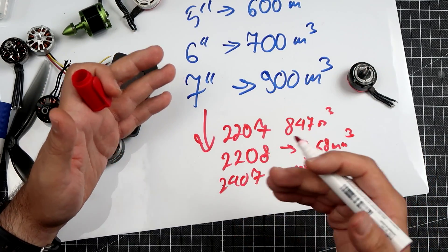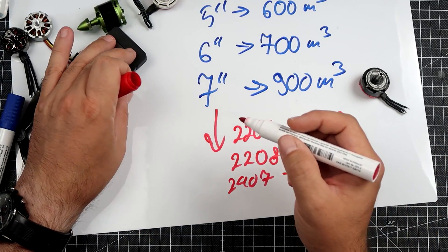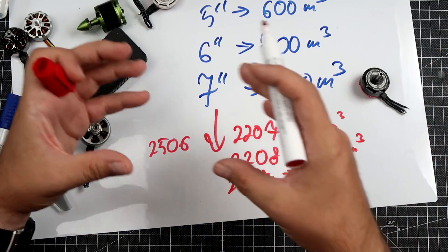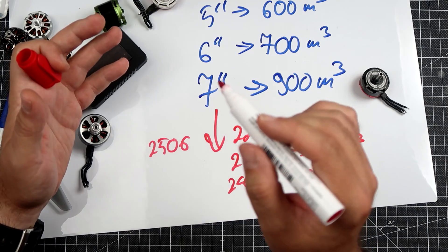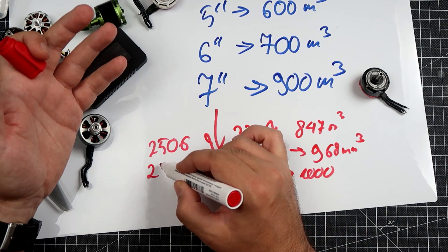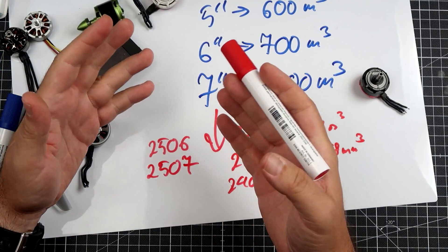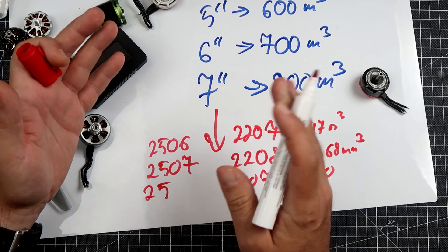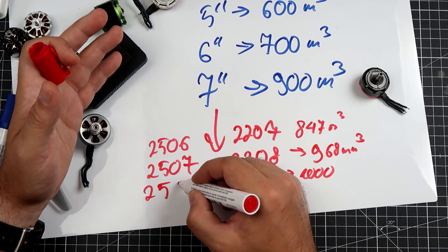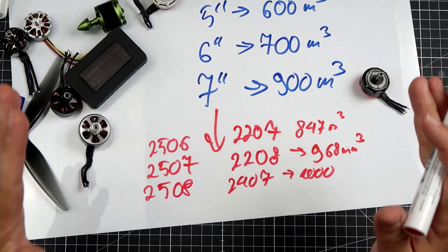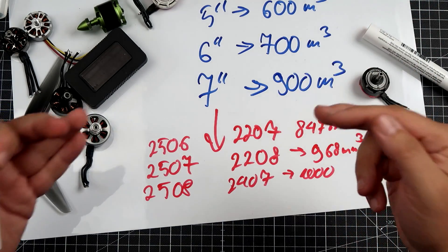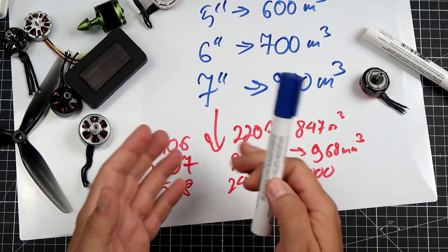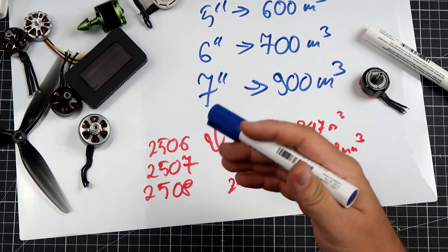The real fun with seven inches begins with 2506, which has plenty of volume. The perfect size in my opinion is 2507, which has slightly above 1000 cubic millimeters. If you want huge motors, 2508 delivers a shitload of torque. The numbers I've showed are in the description.